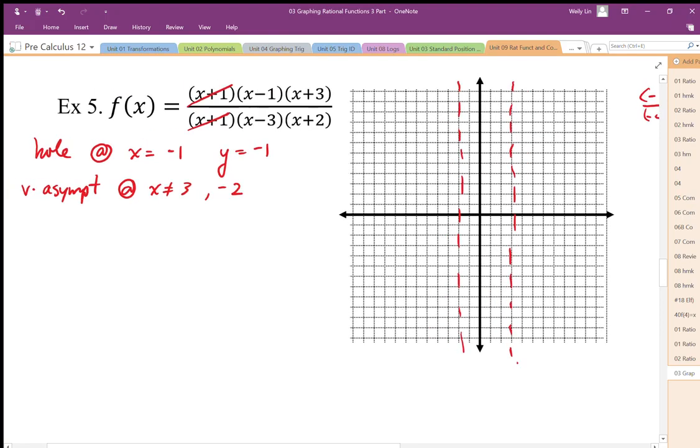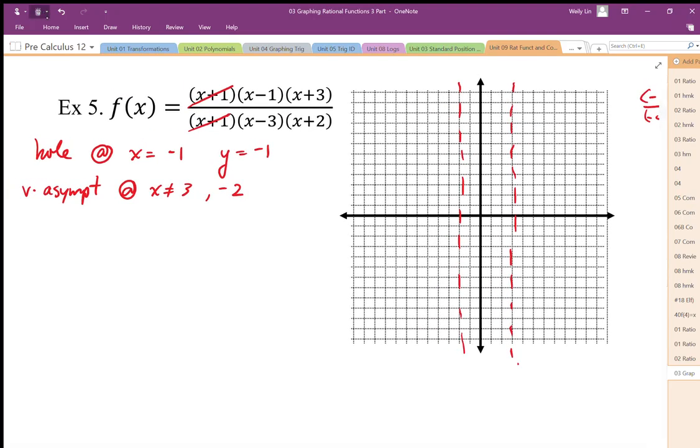And then I need a horizontal asymptote. So the limit as x gets really, really big of f of x. When I look at this, the highest degree power is going to be 1x squared on the top, 1x squared on the bottom. So that I only need to worry about the biggest power terms. So 1x squared divided by 1x squared, as x gets really big, it has the limit of 1. So there's my horizontal asymptote.